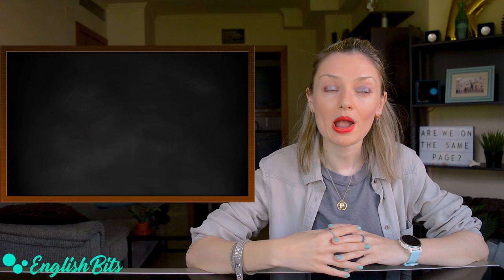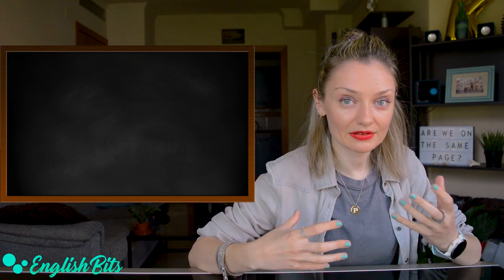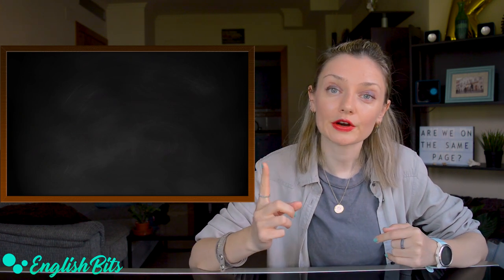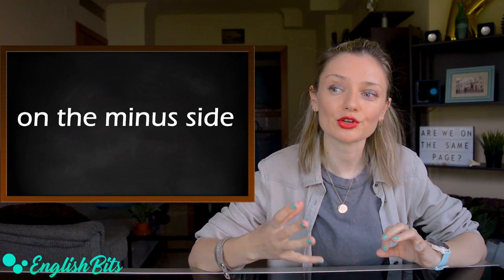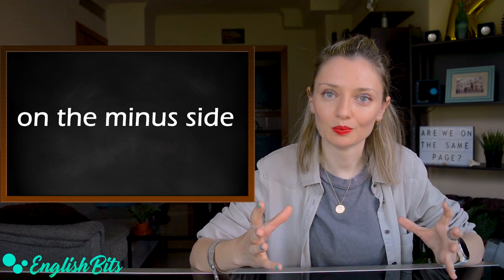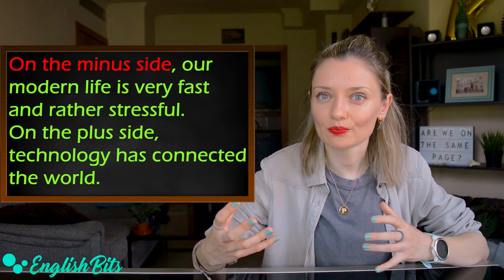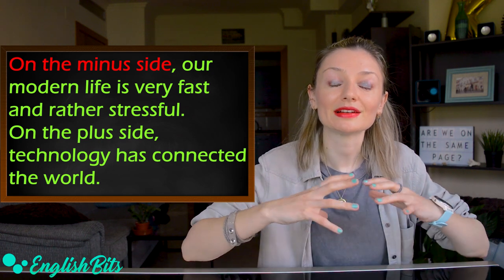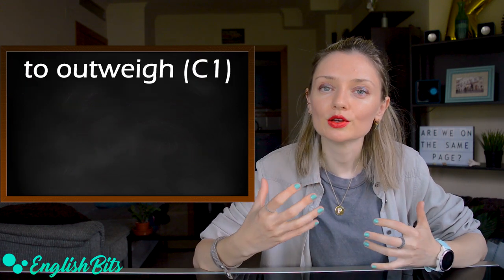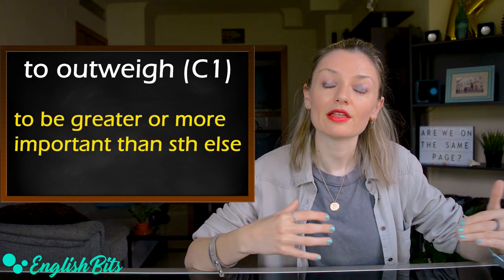Before we start, my previous lesson was on vocabulary to talk about advantages and disadvantages, and I remembered two more interesting things you can use. The first one is 'on the minus side' — I told you that you can use 'on the plus side,' so we can also say 'on the minus side.' For example: 'On the minus side, our modern life is very fast and rather stressful. On the plus side, technology has connected the world.' The second thing is the very useful and advanced verb 'to outweigh,' which means to be greater and more important than something else.